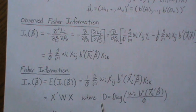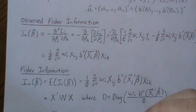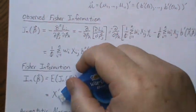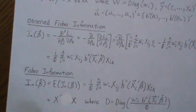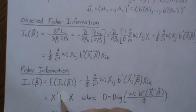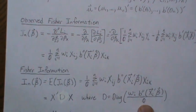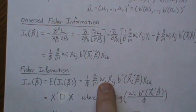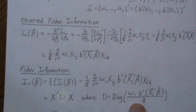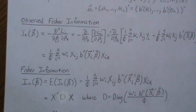The matrix form of Fisher information is X-prime D X, where D is the diagonal matrix of weights containing the w's and phi terms, and the X's are the covariate matrix. I probably should have called that diagonal matrix D rather than W to avoid confusion.